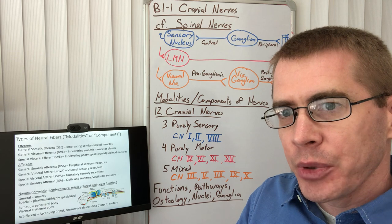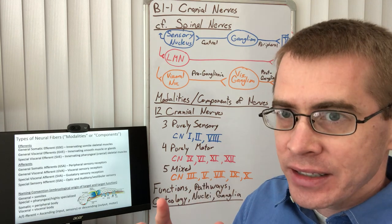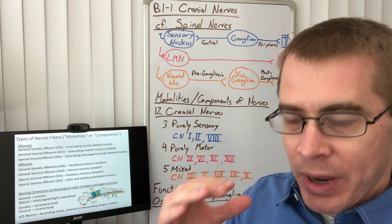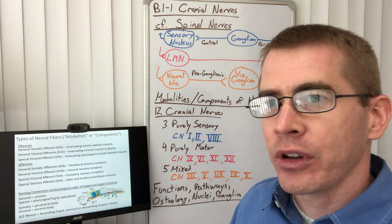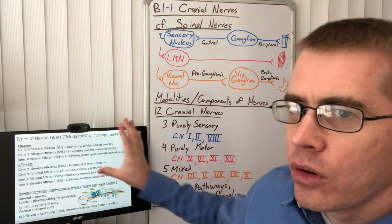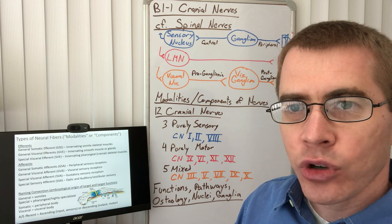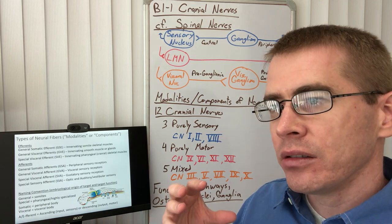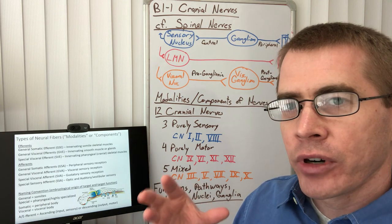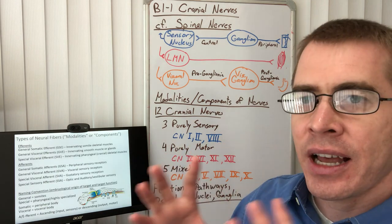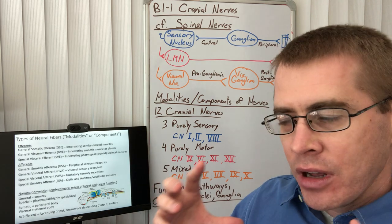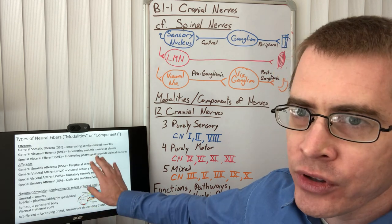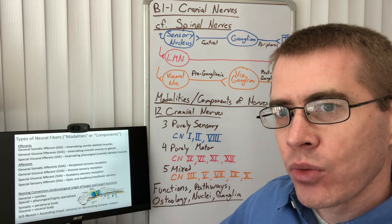Throughout this lecture, think about how the analogy holds between spinal nerves and cranial nerves. The analogy breaks down in some places, and we need to understand why. Generally the concepts are the same. We haven't talked much about the different modalities or components of nerves. Peripheral nerves contain a bundle of different types of nerves with different amounts of myelination that transfer information at different velocities down their axon.